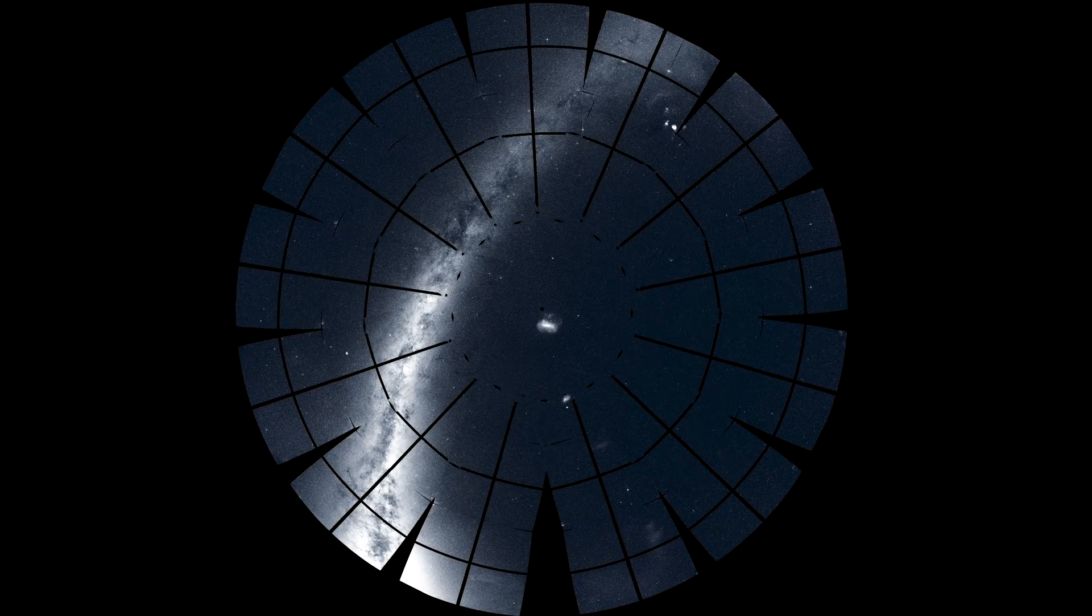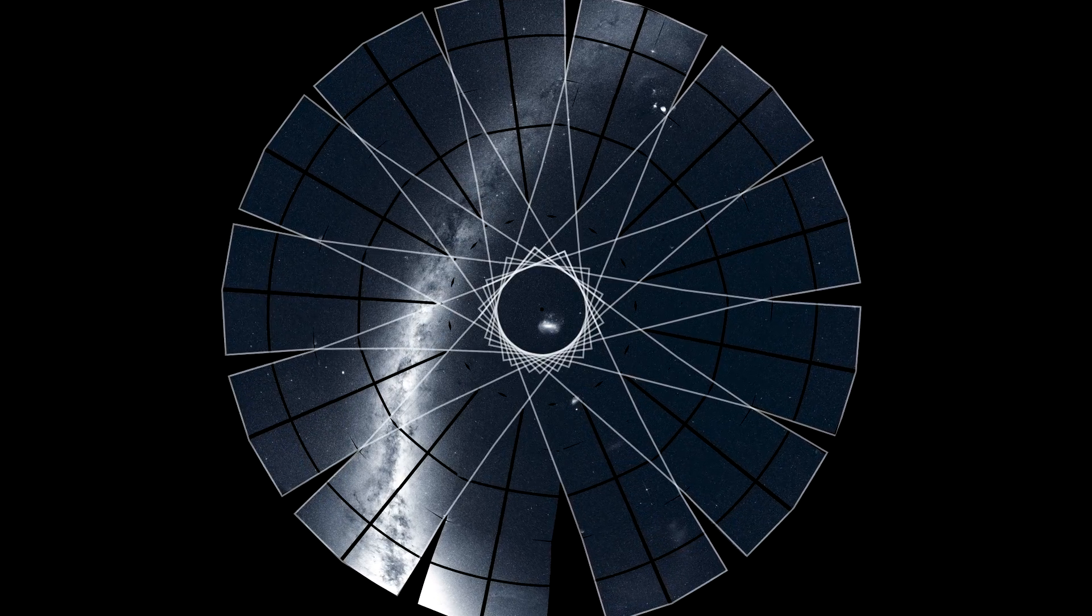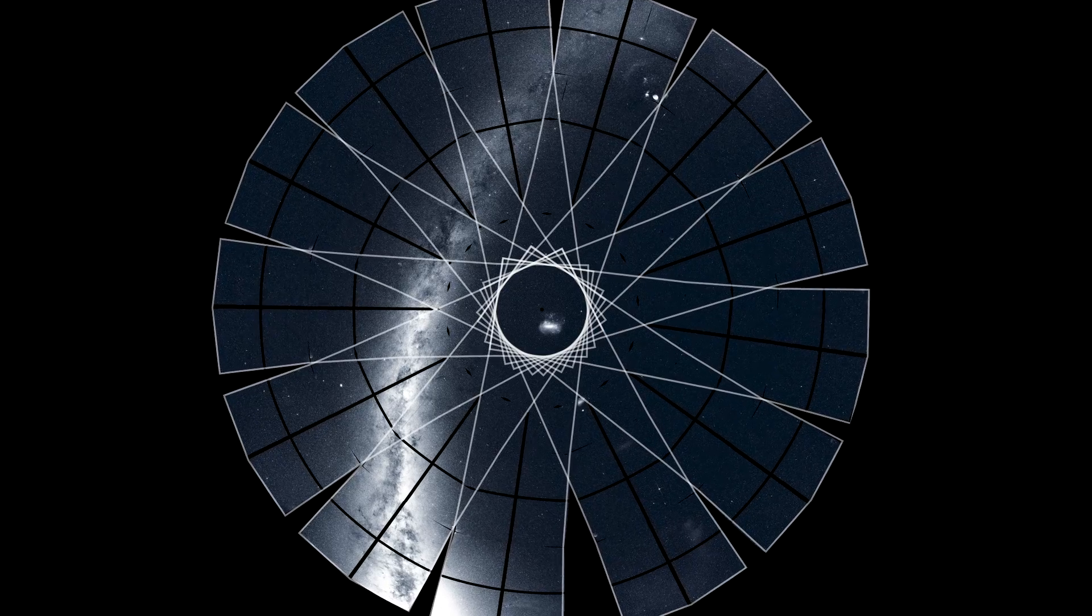To do this, TESS divided the southern sky into 13 sectors, and its four cameras monitored each sector for nearly a month.